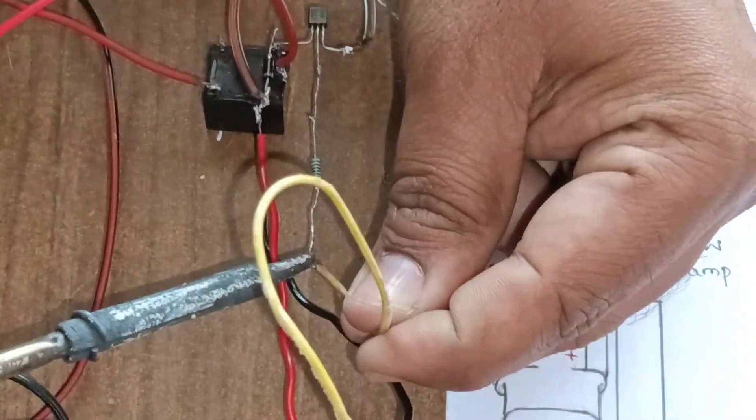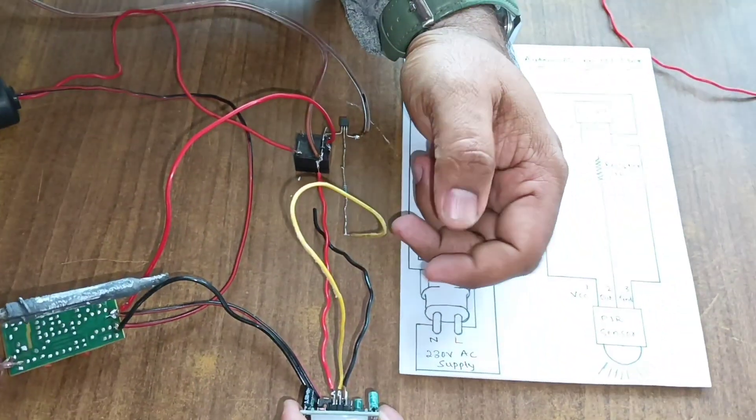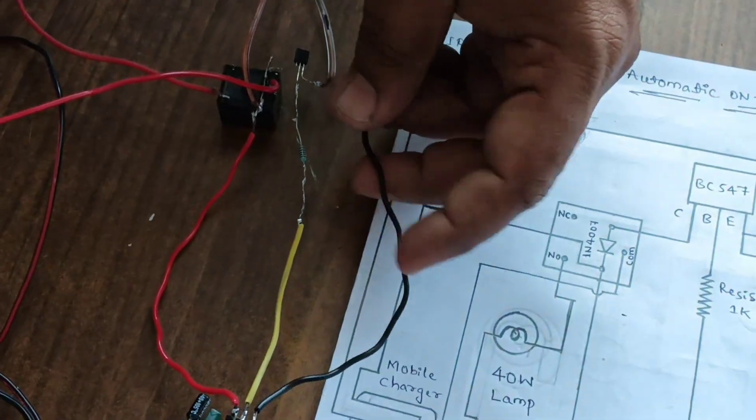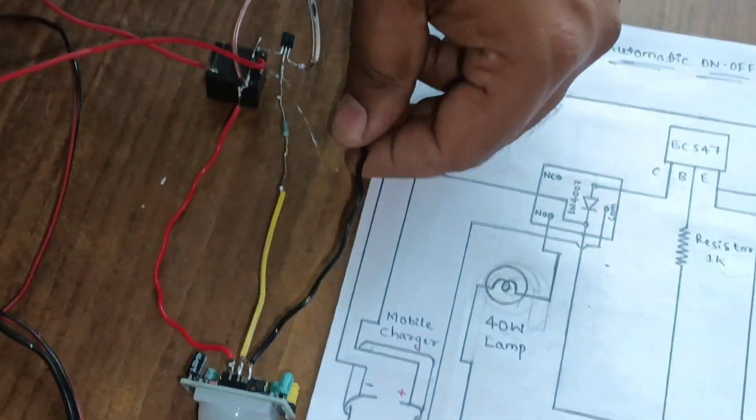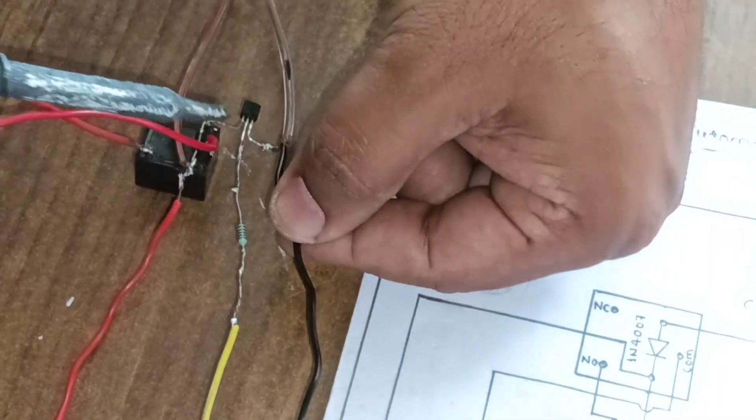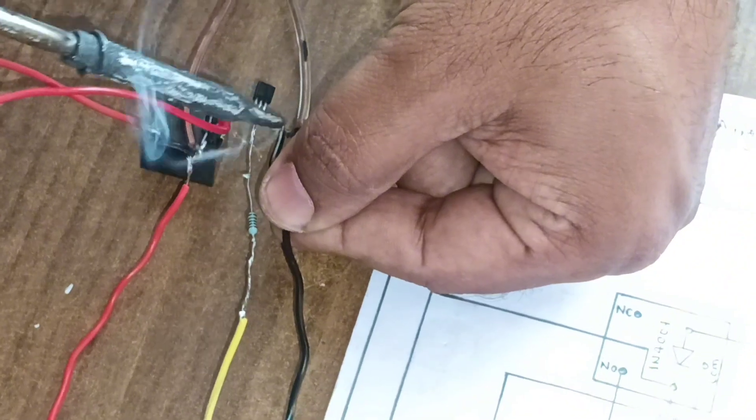And next, third point ground from PIR sensor to emitter of BC547 transistor.